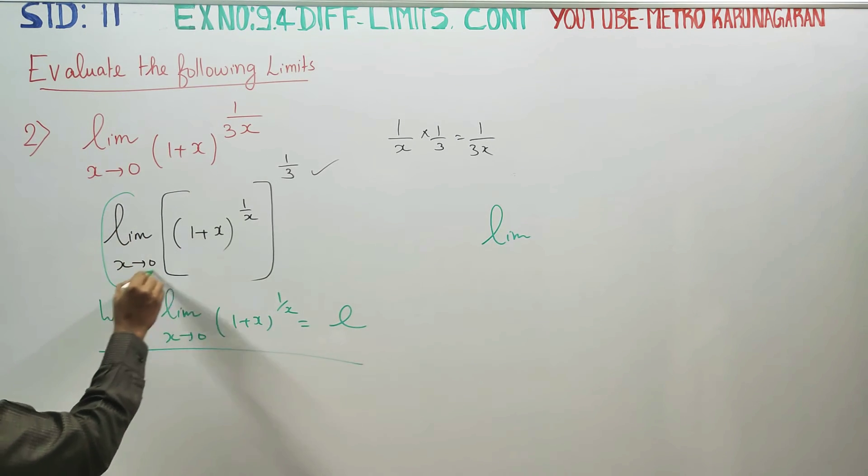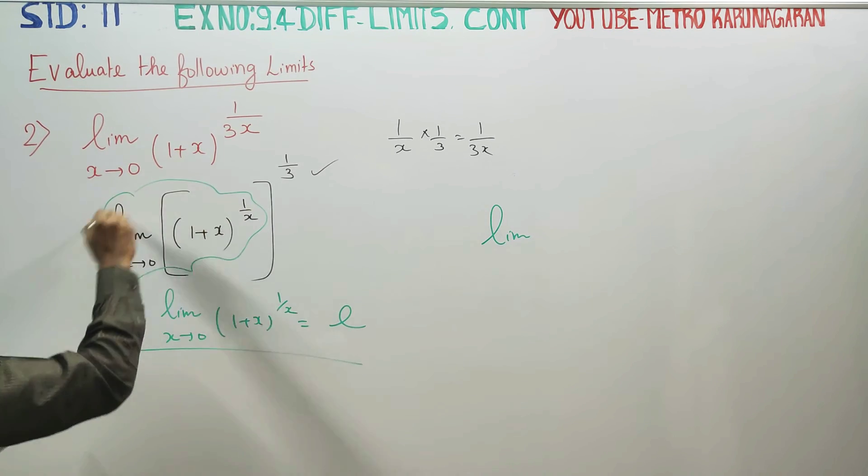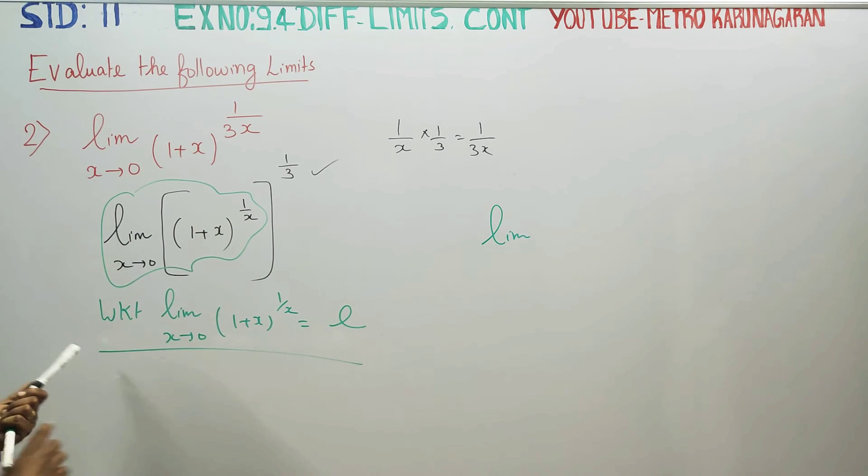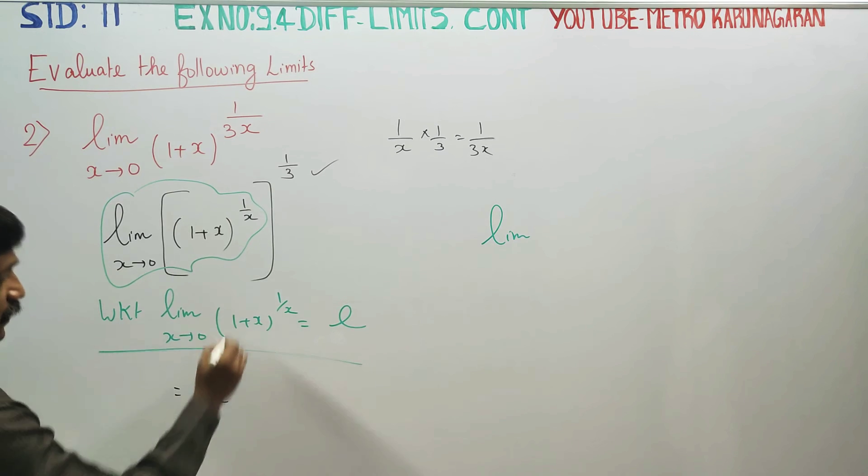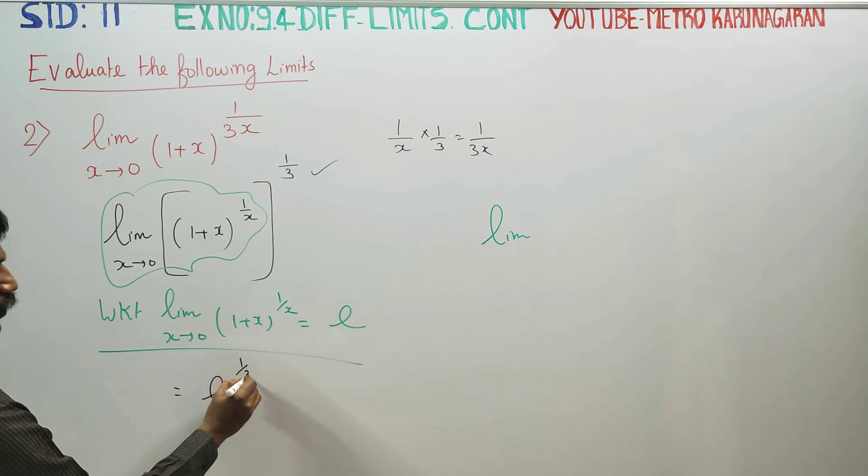If you look at limit x turns to 0, 1 plus 1 by x, then you look at e. All power 1 by 3. This answer is how to substitute. All power 1 by 3 is 1 by 3.